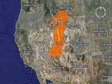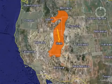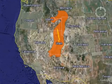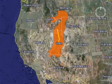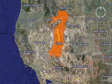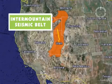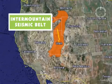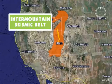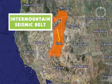Although most earthquakes occur near plate boundaries, there is an area of increased earthquake activity within the interior of the North American Plate, known as the Intermountain Seismic Belt. The belt extends 800 miles from Montana to Nevada and Arizona.